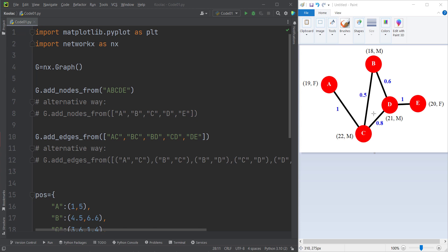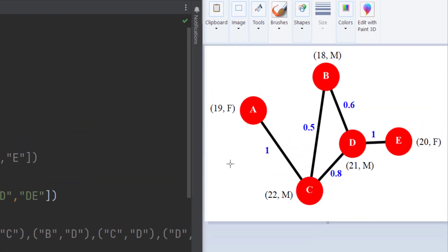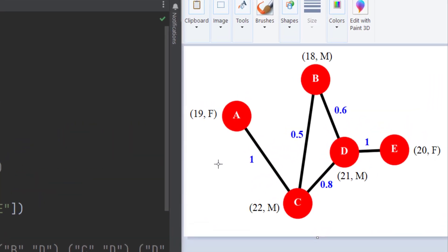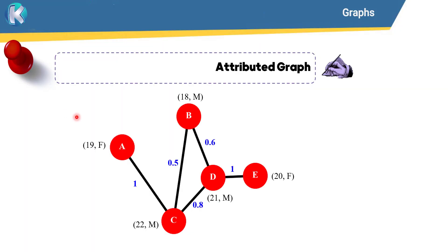Let's talk about how we can create an attributed graph. What do I mean by an attributed graph? Our graph has features, or attributes. Nodes have attributes, edges have attributes, and maybe the graph itself has attributes. This is called an attributed graph.